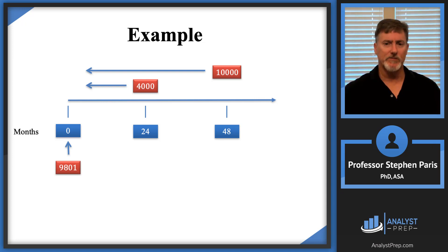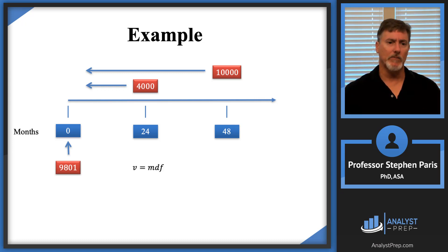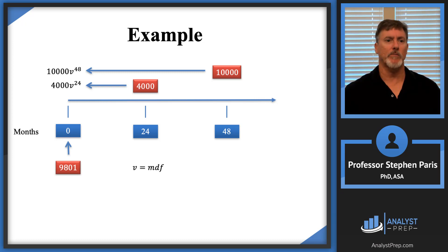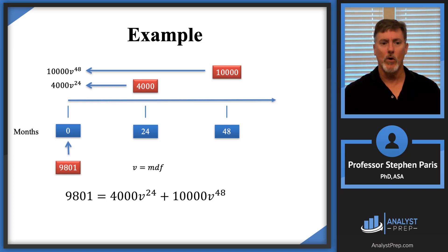We're using months as the timeline, so I let v equal the monthly discount factor. The 4,000 is discounted back 24 months, giving a present value of 4,000 times v to the 24th. The 10,000 is discounted back 48 months, giving 10,000 times v to the 48th. Knowing that 9801 is the sum of those two values, I get the equation of value: 9801 equals 4,000 times v to the 24th plus 10,000 times v to the 48th.